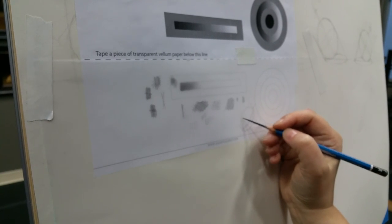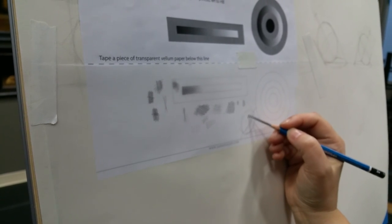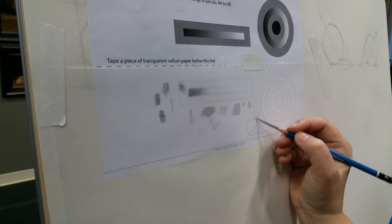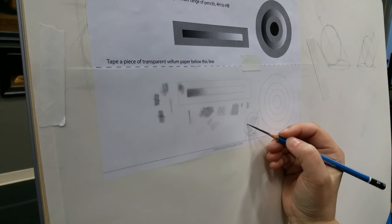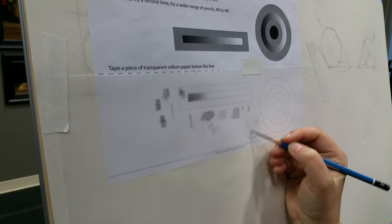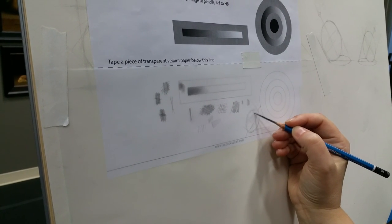Sometimes what happens is people have filled up all the dark light, they've shaded this whole area of the sphere, and they've gotten too dark, too close to the highlight.